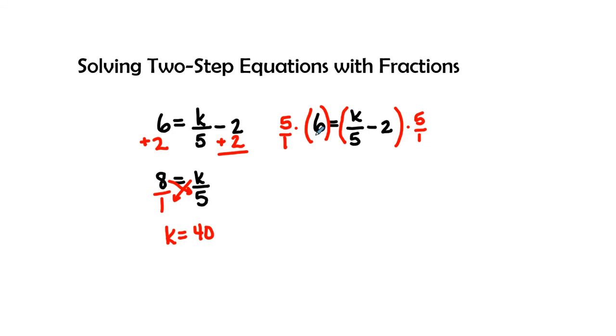It doesn't change the value because anything over 1 is the value of the numerator. So here we go with 5 times 6 is 30 and 1 times 1 is 1, so we'll have 30 on my left hand side.